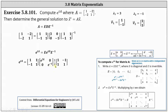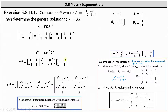Now we multiply. Moving the one half to the front and multiplying the three matrices, the result is one half times the two by two matrix where the entries are: e to the three t plus e to the negative t, negative e to the three t plus e to the negative t, negative e to the three t plus e to the negative t, and e to the three t plus e to the negative t. Performing the scalar multiplication, we have the matrix exponential e to the power of tA.